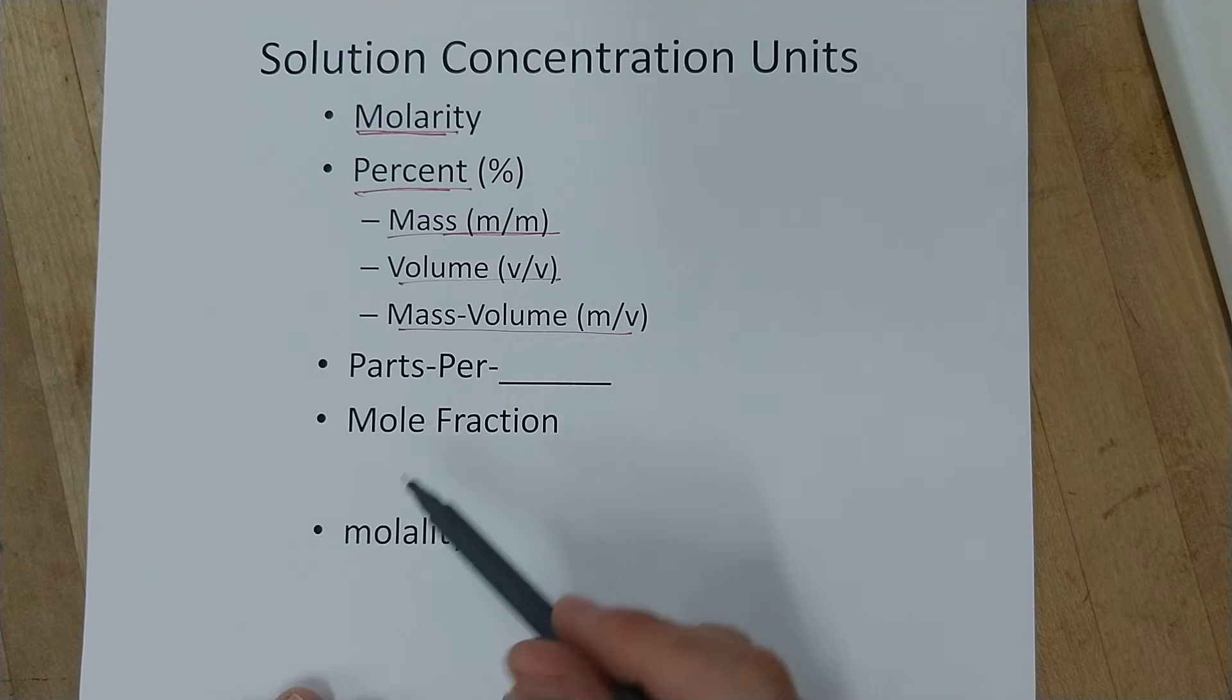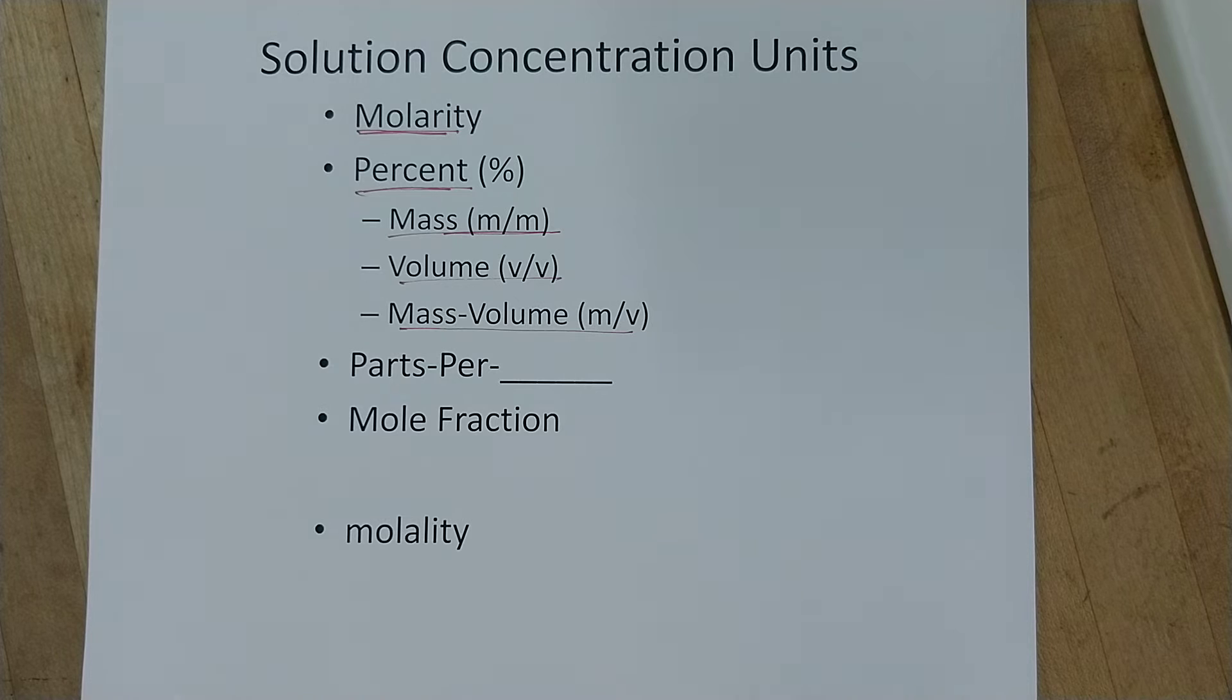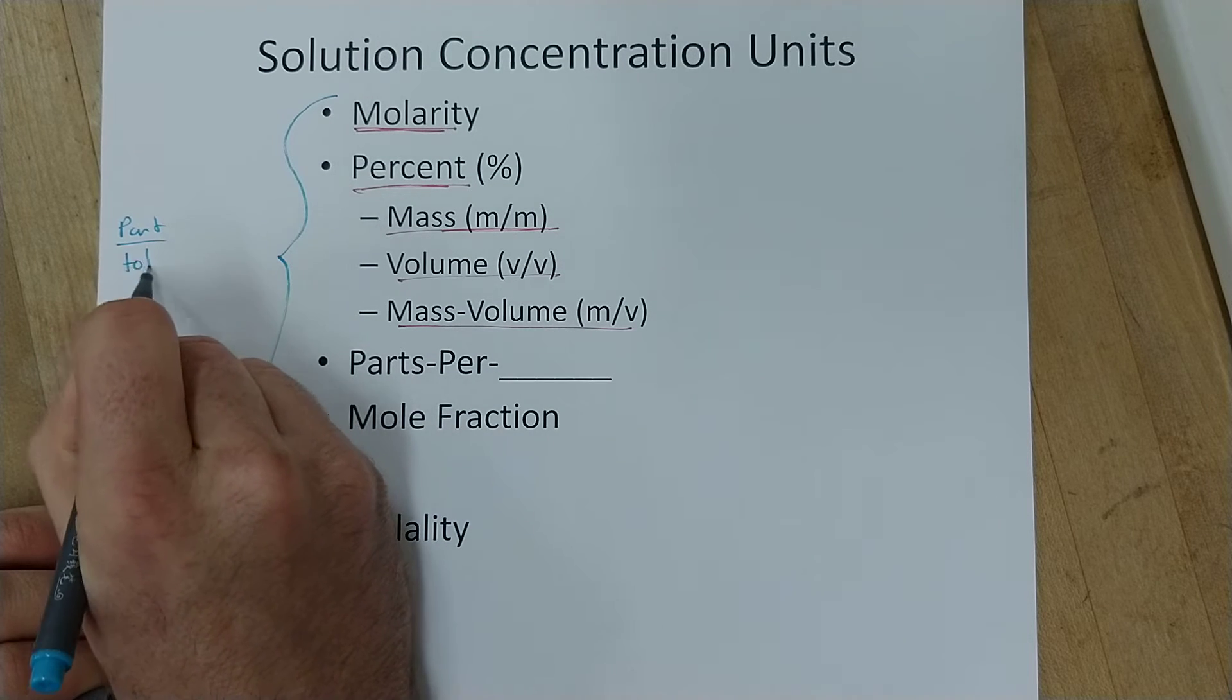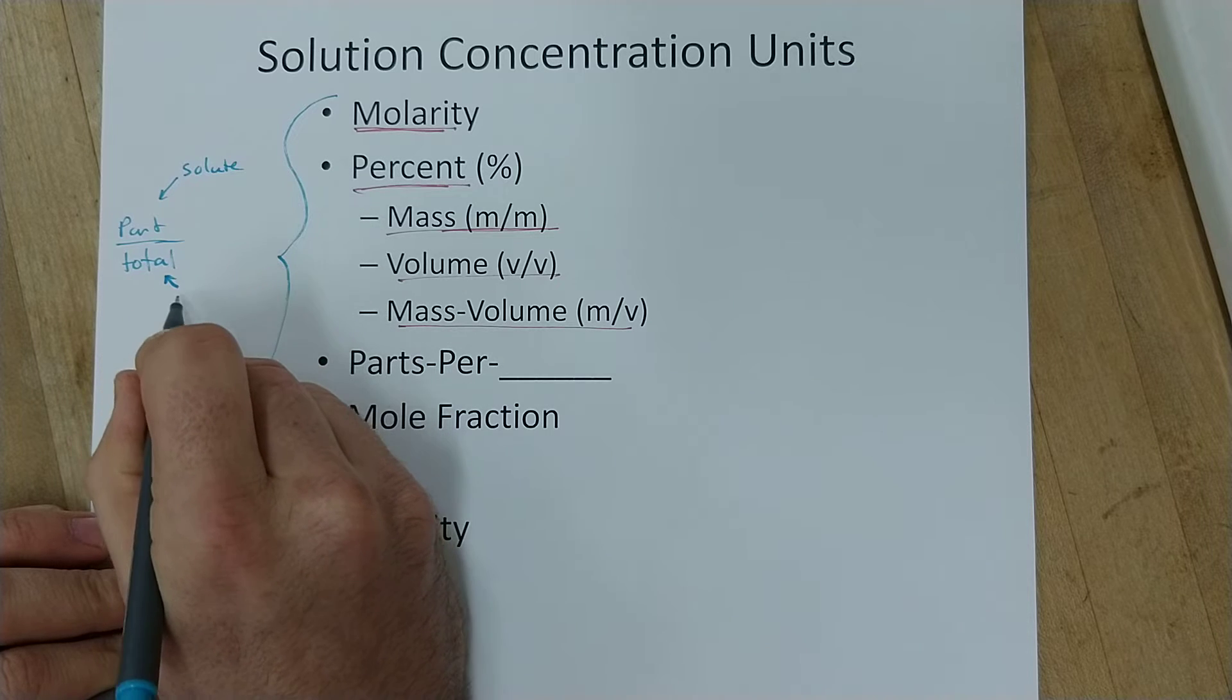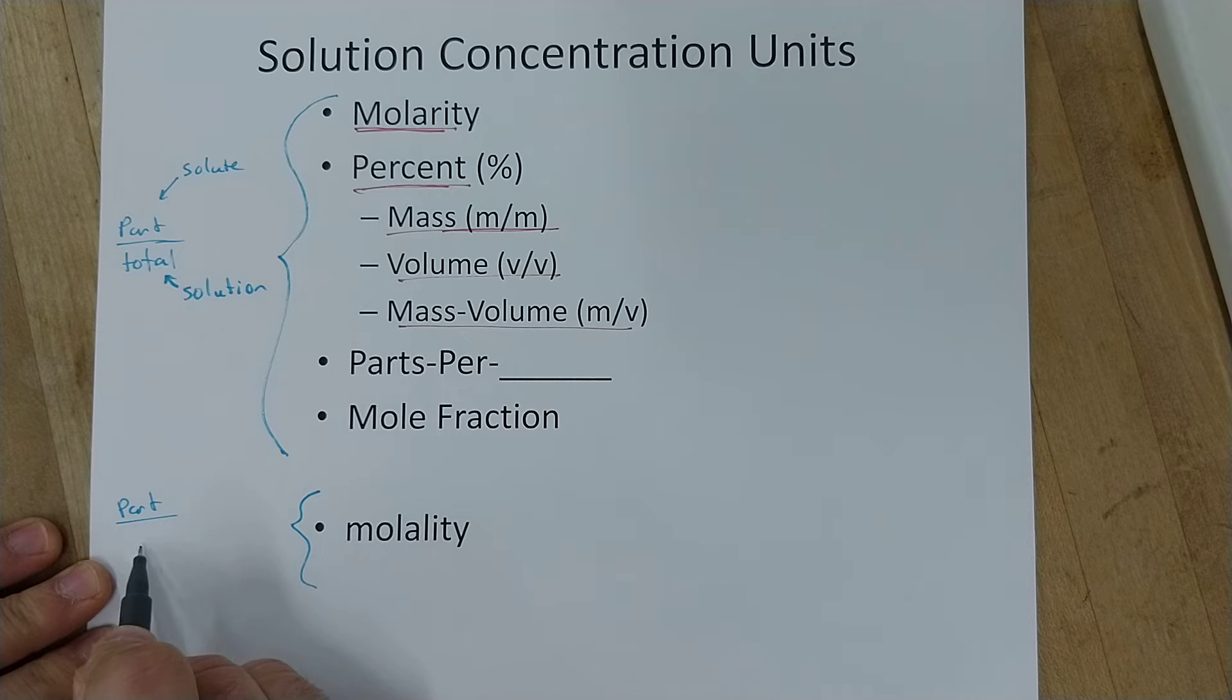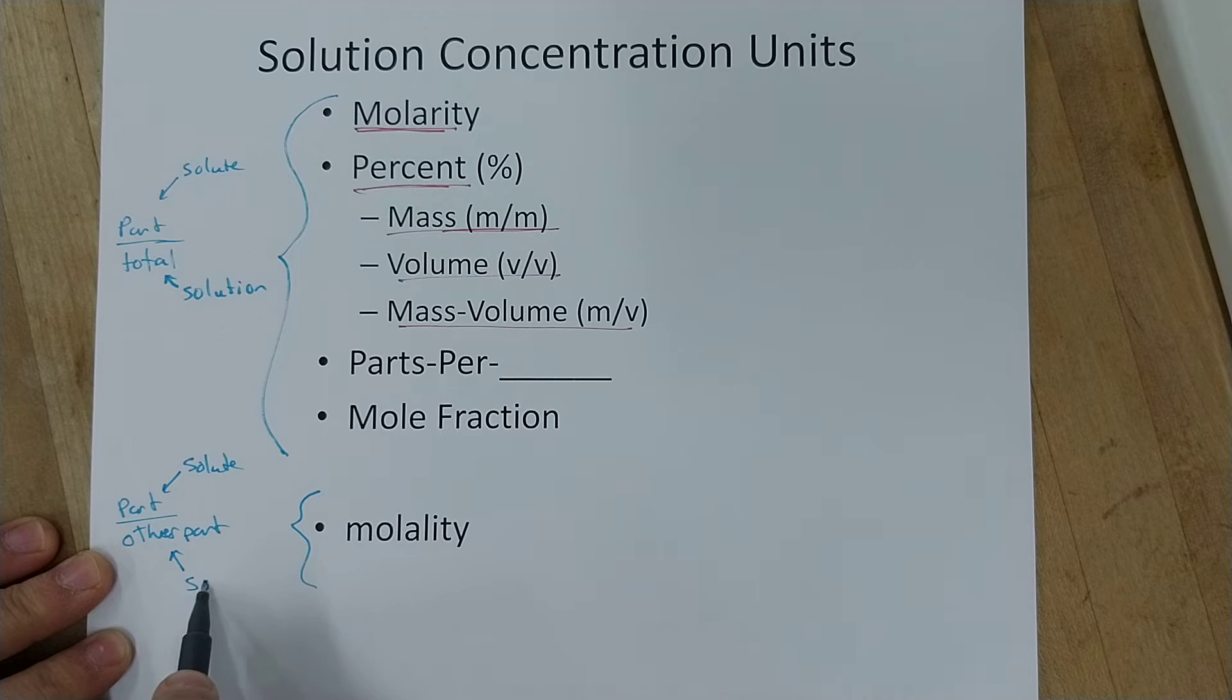So I put them in this list and you can see a little break here because these units are actually all relatively similar and this one is way different. So let's actually break down that first. How are they similar and how is that one different? So all of these units up here are what I would call a part over total unit. Part over total. And for a solution the part that we're interested in is the solute. And the total is the total solution. This one down here though, the molality, is not a part over total. It's a part over other part. And the part that's on top is the solute and the other part that's on the bottom is the solvent.